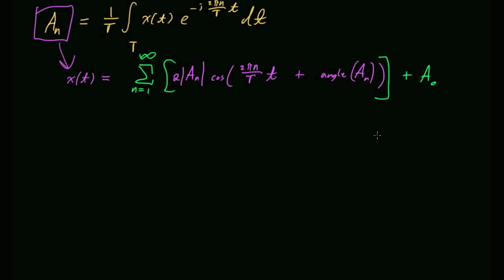With the Fourier transform, it's a little trickier. We're saying that instead of A existing only at certain harmonic frequencies, now A is a continuous function of frequency. There's a formula for it — you integrate over all time: x(t) times e to the minus j-omega-t, dt. The Fourier transform integral is actually a lot simpler than the Fourier series integral — we've made life a little easier, not harder.